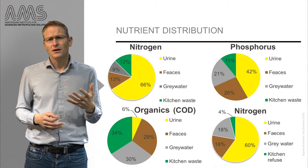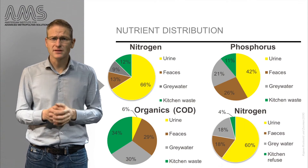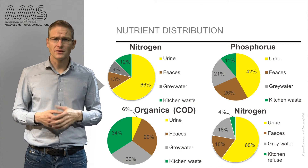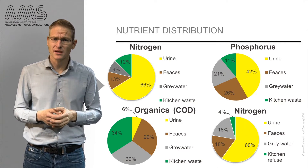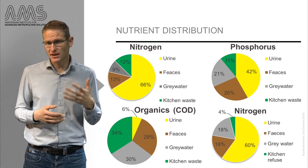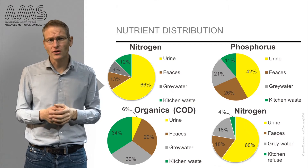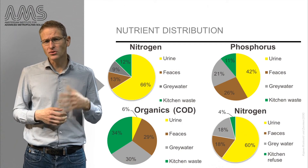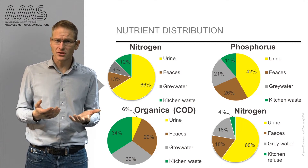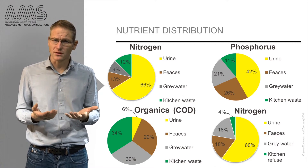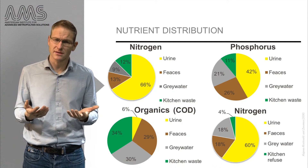If you look at the nutrients and the different contents of these different streams, we see that the major share of nutrients is actually contained in urine, shown here in yellow. Contrary to this, most of the carbon can be found in the remaining fraction — the wastewater including the kitchen waste, gray water and feces.